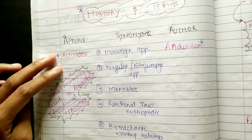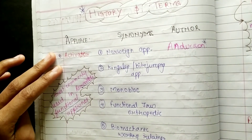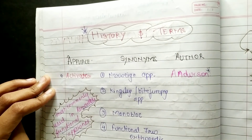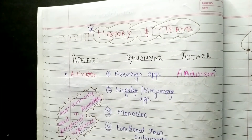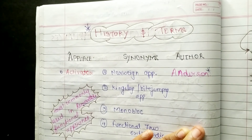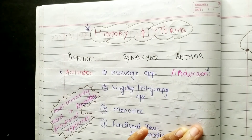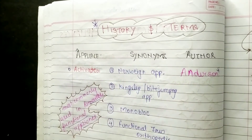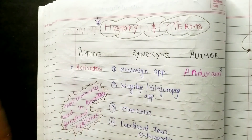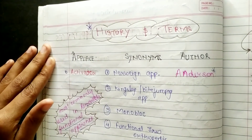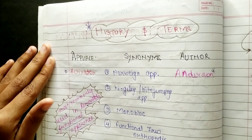Important terminology: Functional Jaw Orthopedic — Anderson and Holp; Dental Orthopedic — Norman Bennett; Dental Facial Orthopedic — B.F. Dewel. These points are very important and direct questions come from them in NEET PG. In the next video we will discuss the classification of myofunctional appliances. If you haven't seen the overview, it is available in Part 1. Thank you for watching.